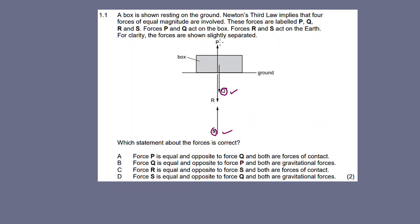We just identified the gravitational forces Q and S. Let's talk about P and R. These are contact forces. P is the normal force, the force applied by the ground to the box. The weight of this box is pressing on the ground, so the ground is pressing back up. R is the force being applied on the ground due to the box's weight. So P and R are contact forces where the ground and the box come into contact.